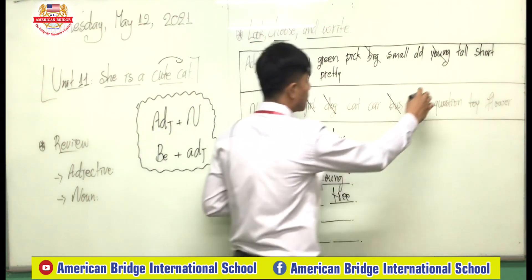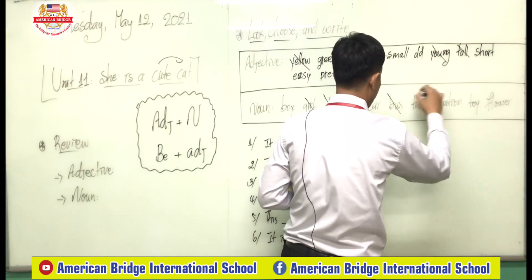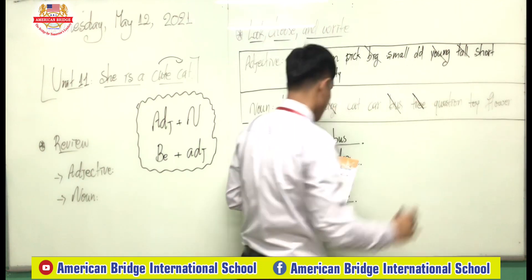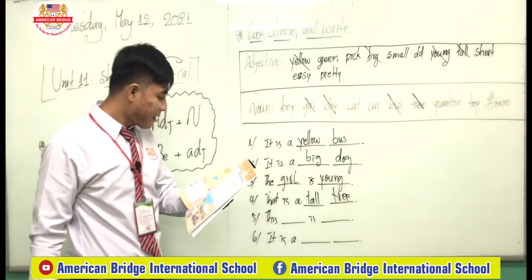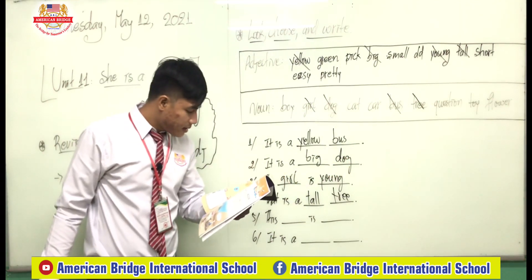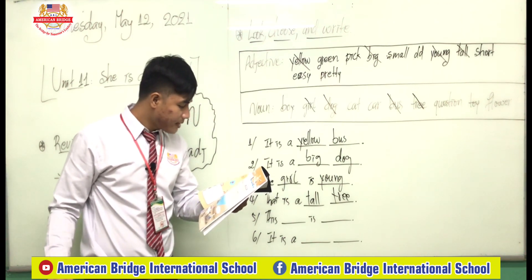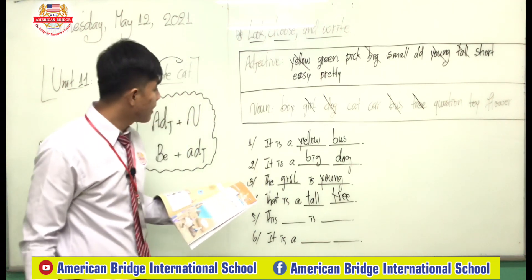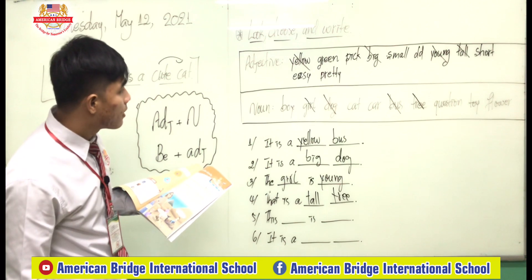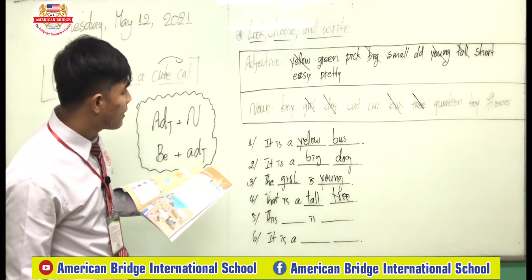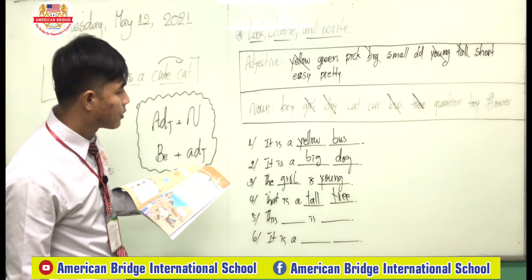Number five: what is it everyone — question, flower, cat, car, or toys?